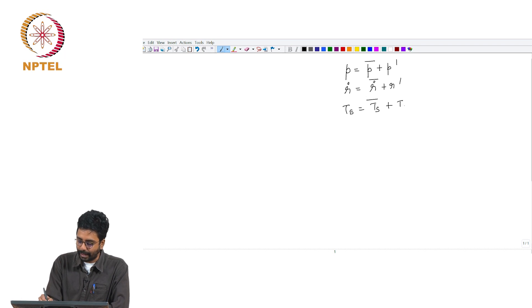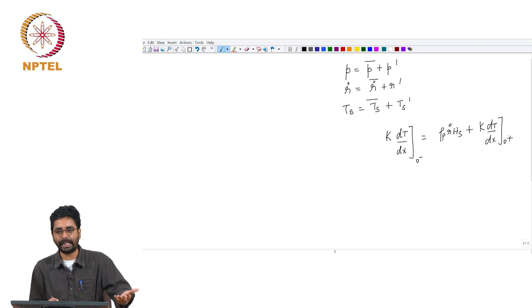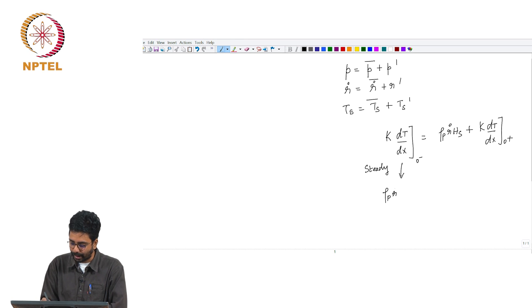In the steady-state equation, you remember k dT/dx at 0 minus is equal to rho_p r dot h_s plus k dT/dx at 0 plus. This is the basic equation both for steady as well as unsteady regression. For the steady case, this was rho_p r dot c_p(T_s - T_0) equals rho_p r dot h_s plus the gas phase heat flux term, which we found to be rho_p r dot c_p(T_flame - T_surface) divided by (exponential zeta star minus 1). This is the steady-state flux balance which we have already discussed.